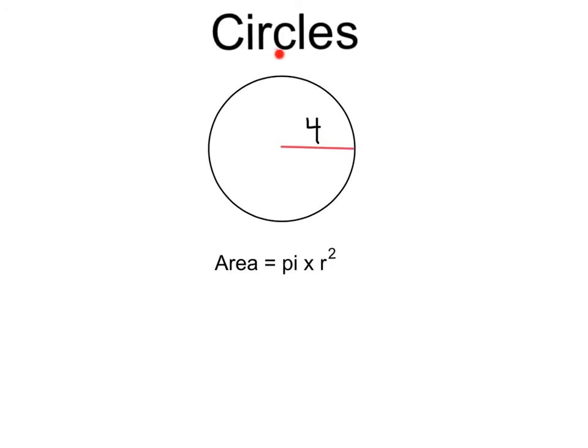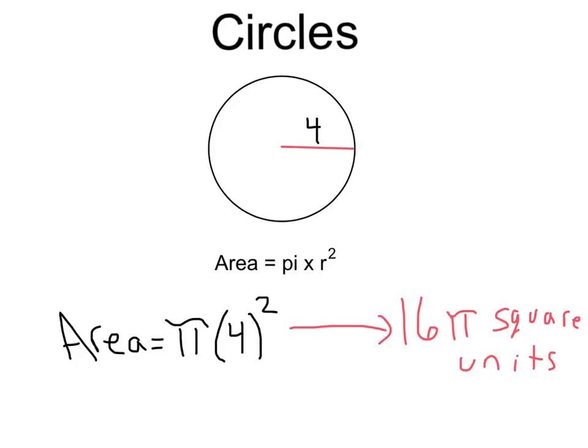And lastly, circles. The area is equal to pi r squared, or pi times the radius squared. For this circle, that would be area equals pi times the radius 4 squared, which would give 16 pi square units.